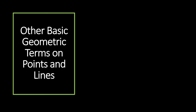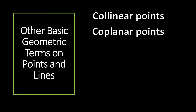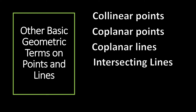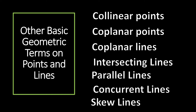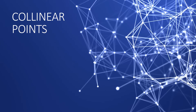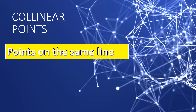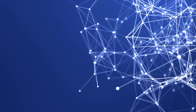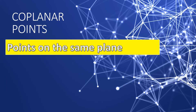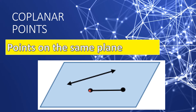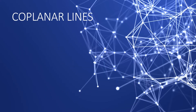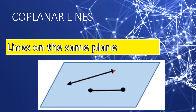Let's define other basic geometric terms on points and lines. We have collinear points, coplanar points, coplanar lines, intersecting, parallel, concurrent, and skew lines. Collinear points are points on the same line. Coplanar points are points on the same plane. Coplanar lines are lines on the same plane.